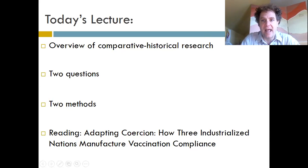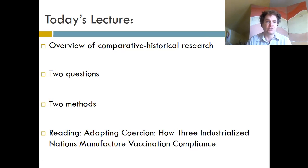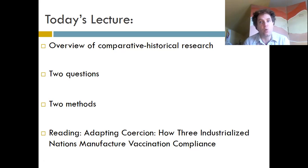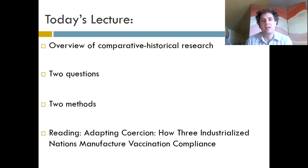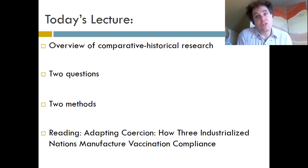So what are we going to look at today? First, we're going to talk about an overview of what comparative historical research is. Then I'm going to talk about two questions that are important when considering it, and two specific methods within the general framework of comparative historical research that sociologists use. Lastly, I'm going to talk about the reading for today, which is my article, 'Adapting Coercion: How Three Industrialized Nations Manufacture Vaccination Compliance,' which could become particularly relevant in the era of coronavirus.